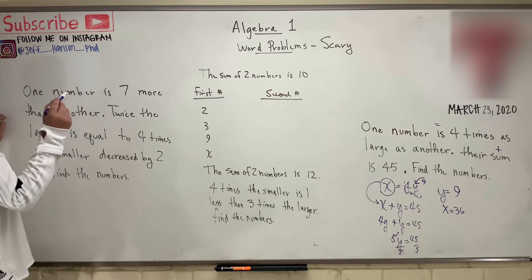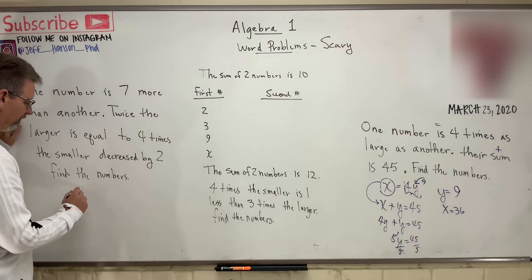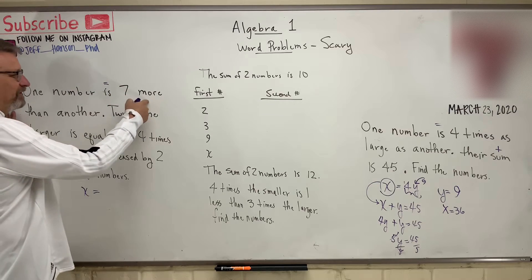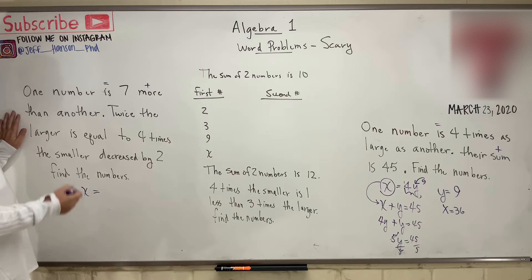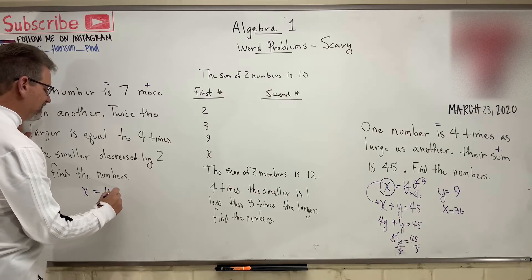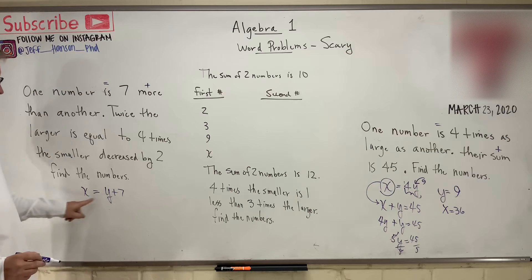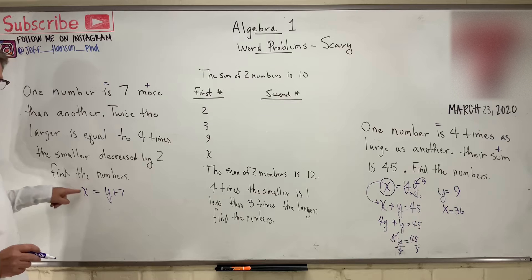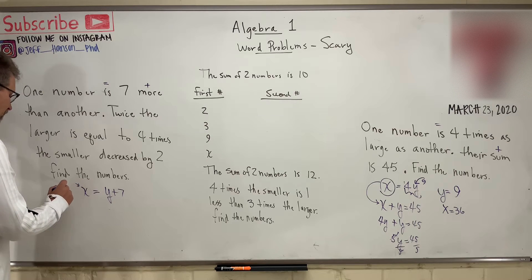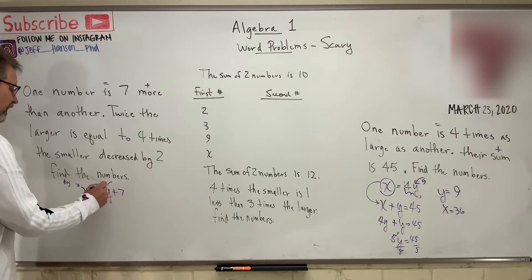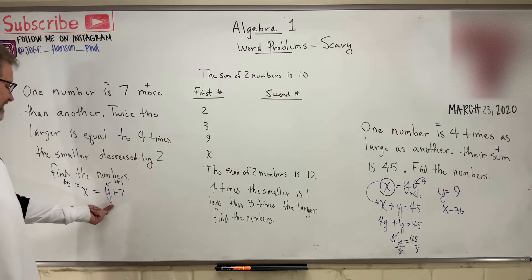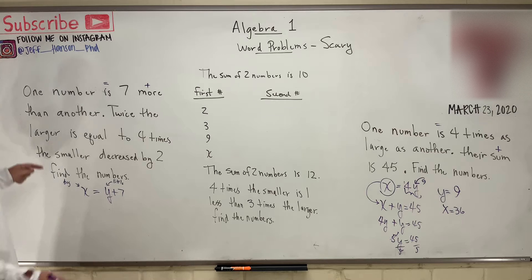One number is seven more than another number. So one number, let's call him X, is seven more. I have to add seven to it. Then another number. So let's say Y plus seven. Which of these two numbers is smallest, X or Y? Y is smallest, isn't it? Because I have to add seven to him just to equal the other guy. So this is the big number, this is the little number. You can do that just by logic.